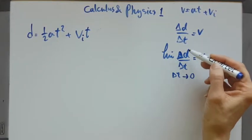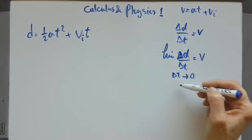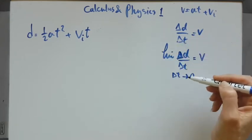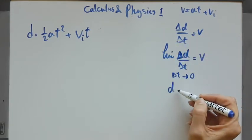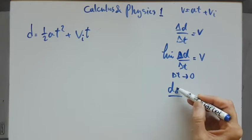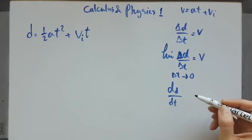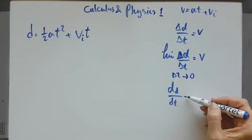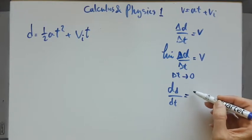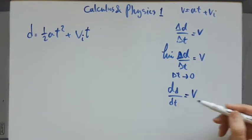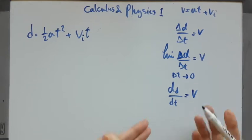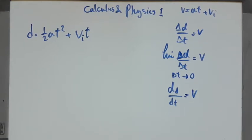Of course, this is the definition of the derivative. The derivative of displacement — when T is your variable — is actually the instantaneous velocity. You have learned derivatives, and you can relate to this.